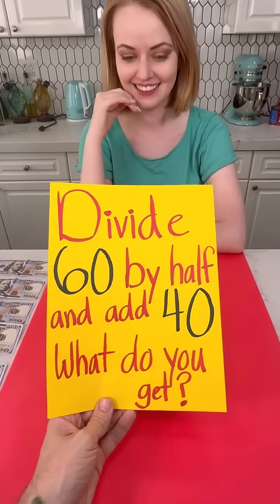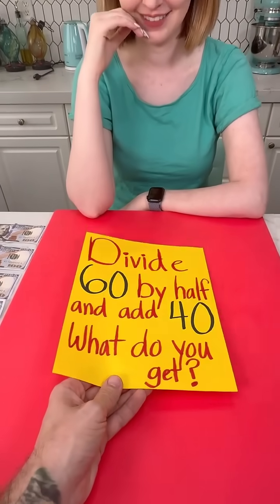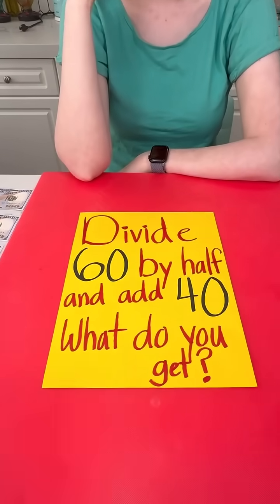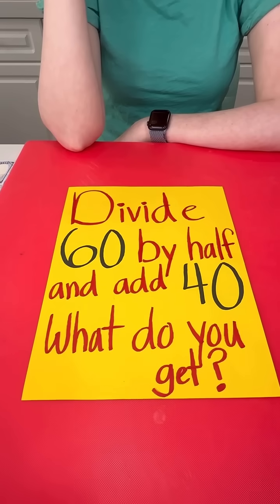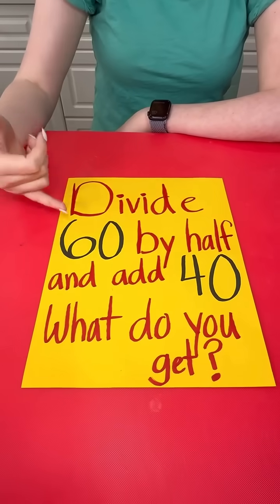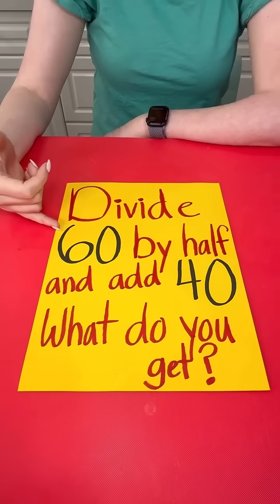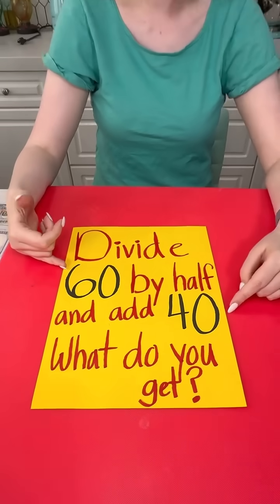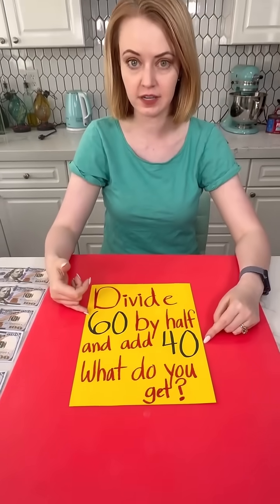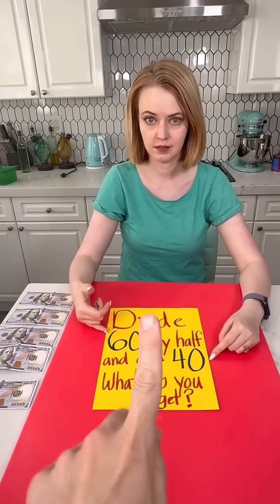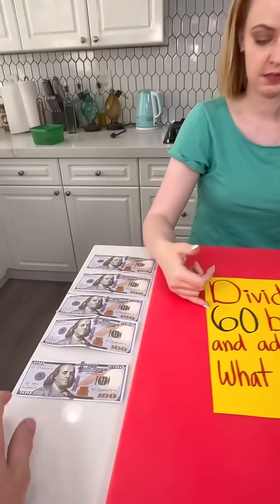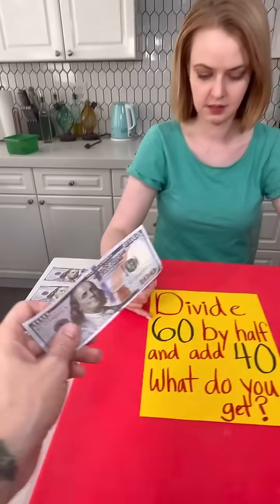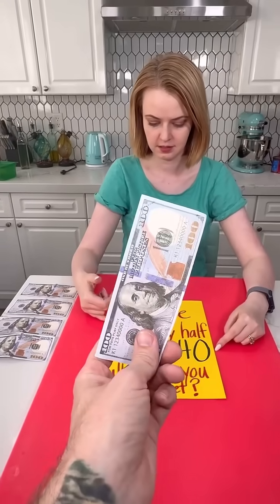Divide 60 by half and add 40, Jenny. What do you get? Divide 60 by half is 30 and you add 40 is 70. Ooh, wrong answer. So for every wrong answer, you lose $100, okay?